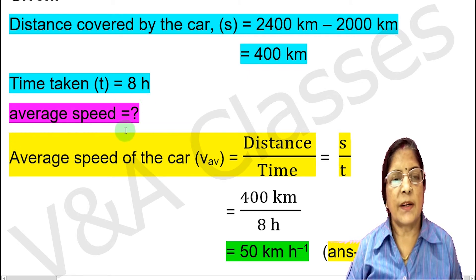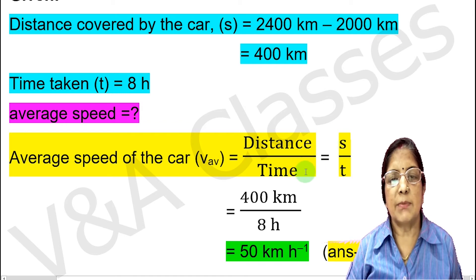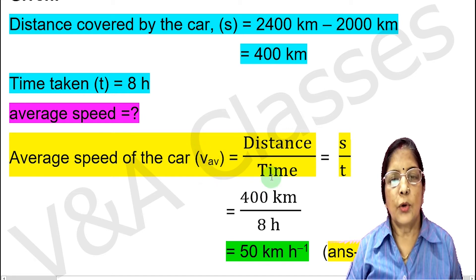Now, what is the average speed? We will write the formula: average speed v_av equals distance upon time, where distance is represented by the symbol s and time by t. Putting in the values, distance is 400 km and time is 8 hours. After solving, the result is 50 km per hour. This is our first answer.